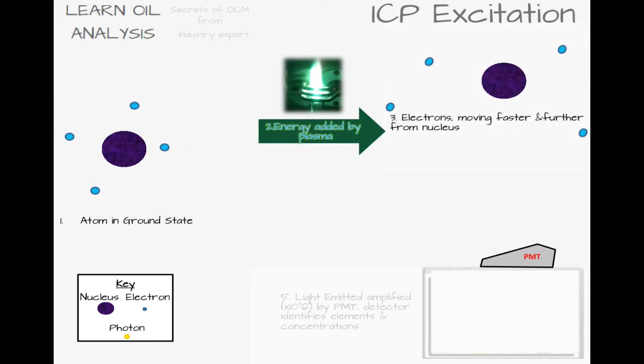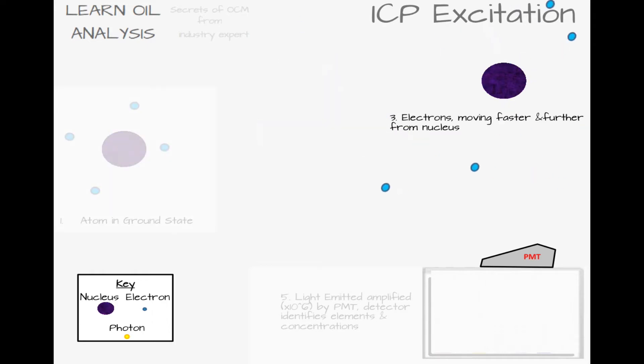When the plasma heats the atom, it becomes excited, with the electrons moving faster and further from the nucleus. The atom is now in an excited state, which is not stable, and so it has to release this energy to get back to the ground state. This energy is lost as a photon of light.